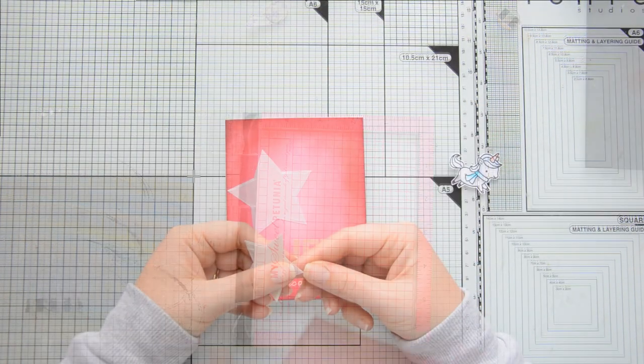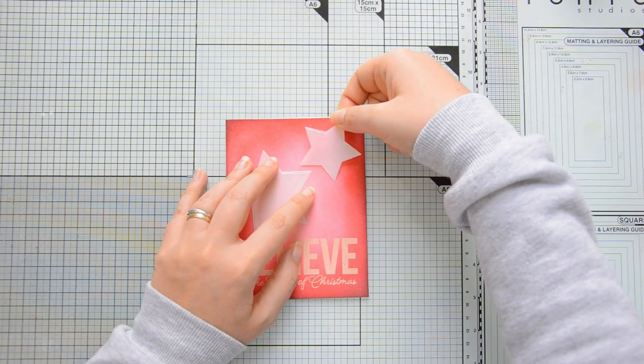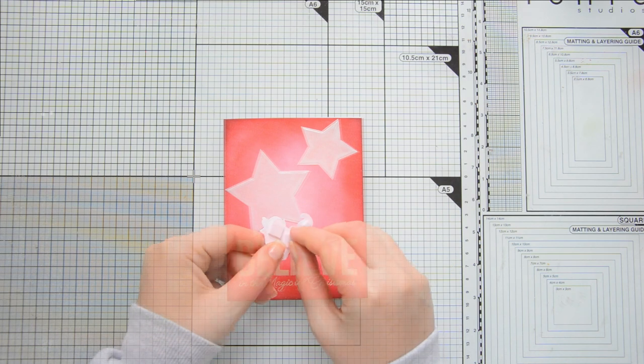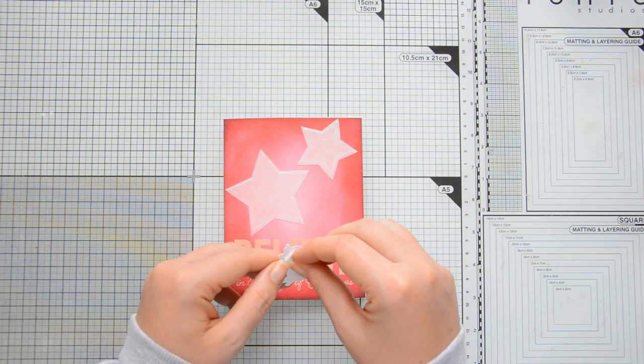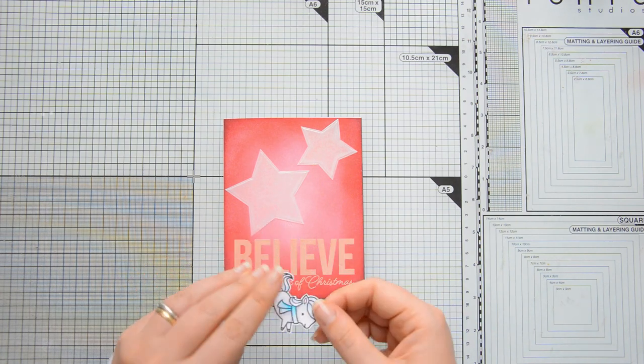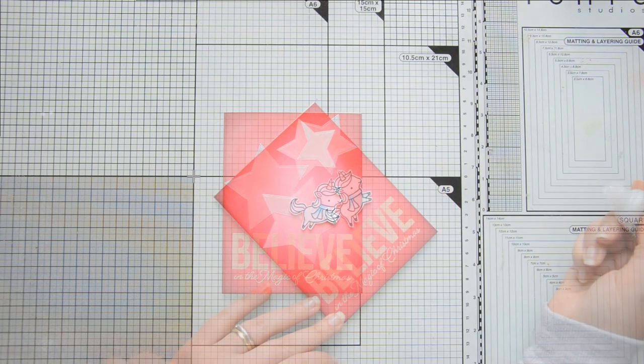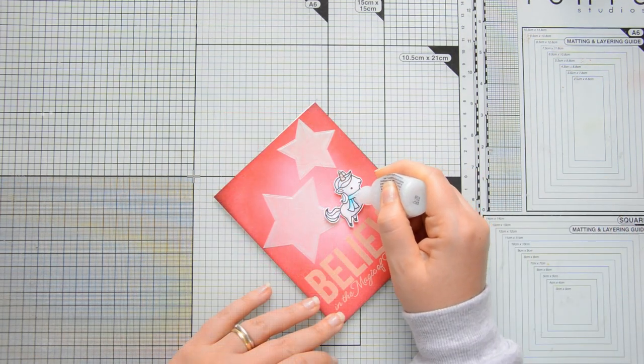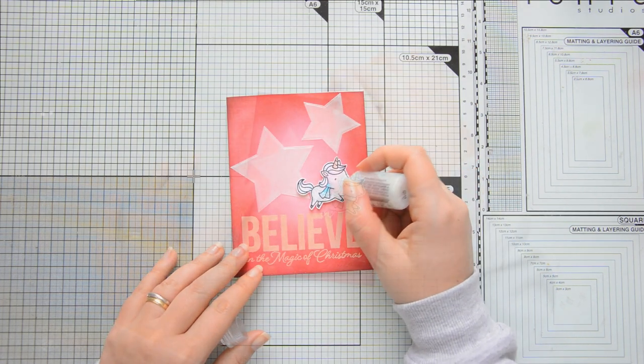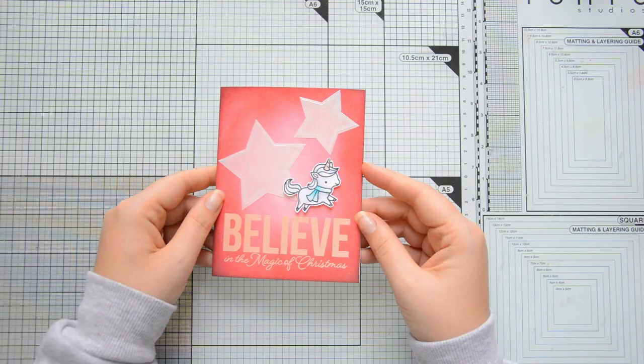Off camera I also stamped and die cut the unicorn from the Lawn Fawn Winter Unicorn stamp set because I felt it was perfect to go with the sentiment I have on my card. I adhered the pearlescent vellum stars to the top portion of my card front and then I popped up my unicorn on some foam squares for some extra interest. I did have to add a little bit of glitter and for that I used crystal stickles and that finished off my first card.